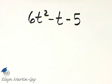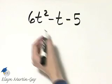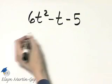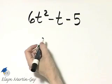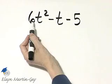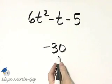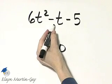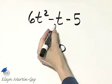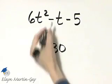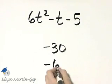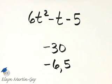Let's now factor by grouping, or the AC method. No common factor. I'm looking for two numbers whose product is 6 times negative 5, whose product is negative 30, and whose sum is negative 1, this coefficient. Product negative 30, sum negative 1, that would be negative 6 and 5. Correct product, correct sum.